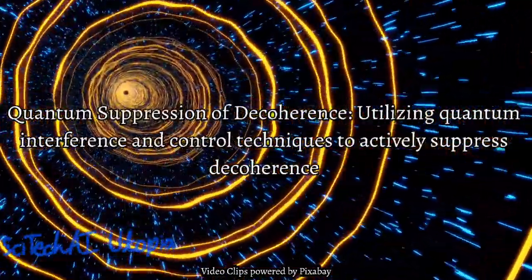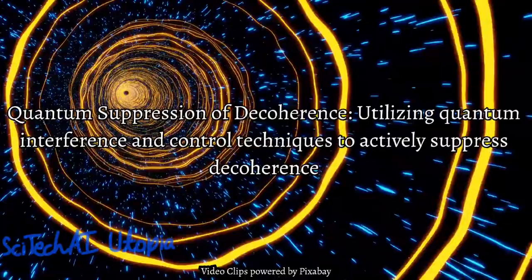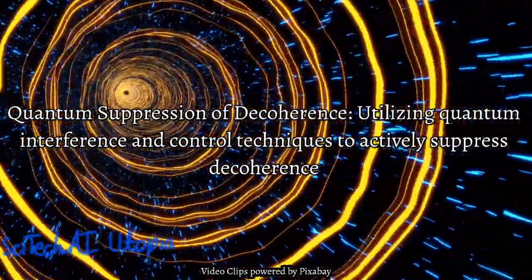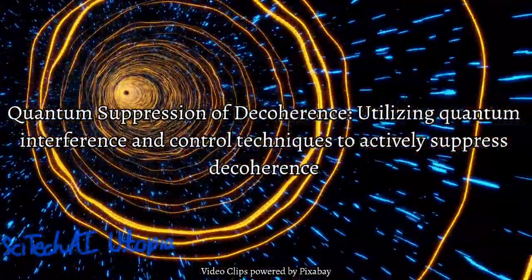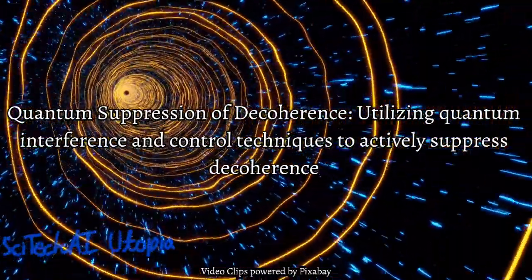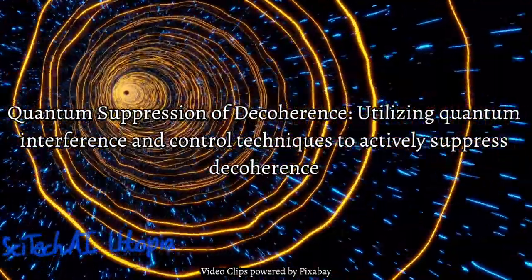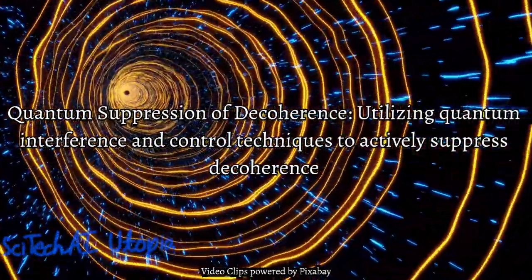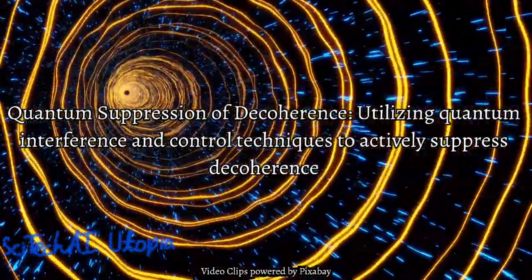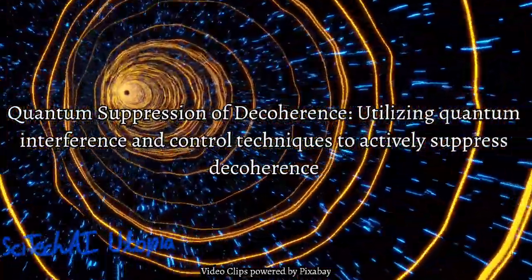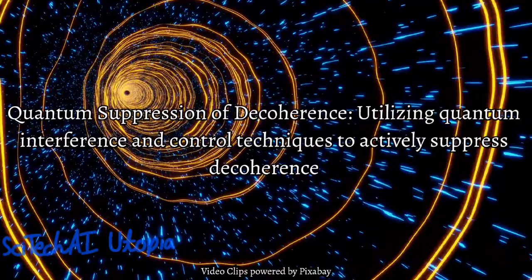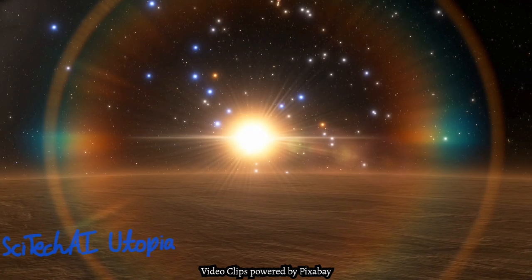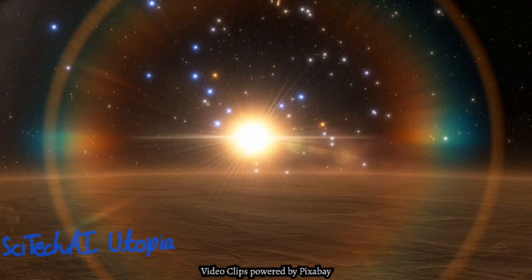Solution 25: Quantum Suppression of Decoherence. This involves using quantum interference and control techniques to actively counteract the effects of decoherence. By employing coherent manipulation of quantum states, researchers aim to interfere with the decoherence process, maintaining the integrity of quantum information throughout computations.